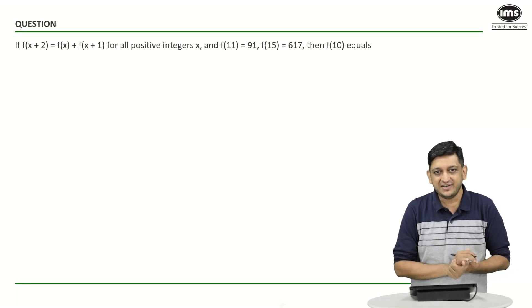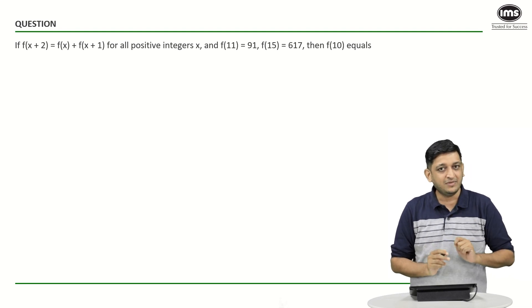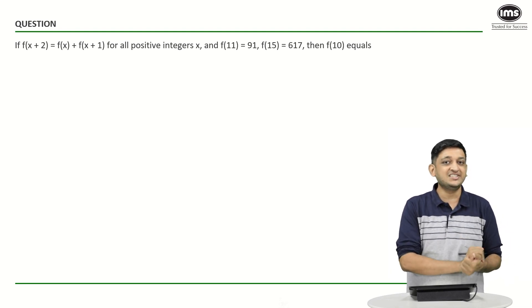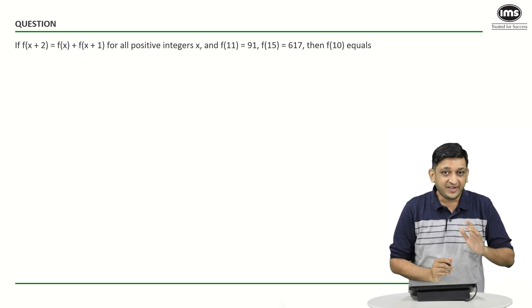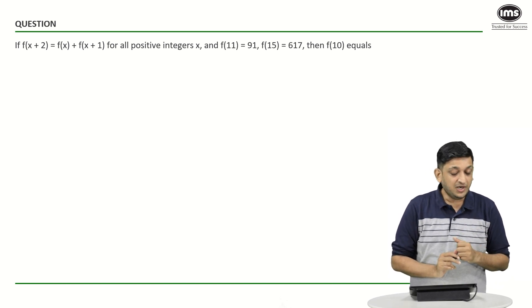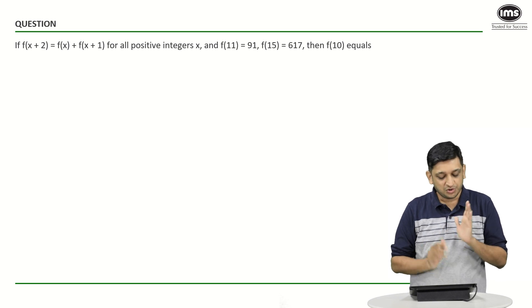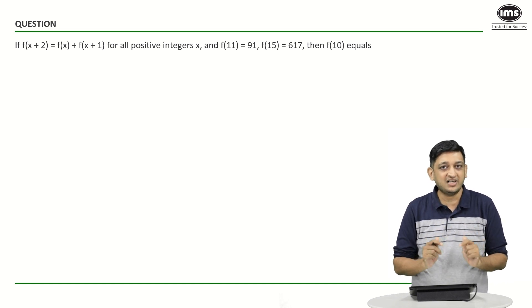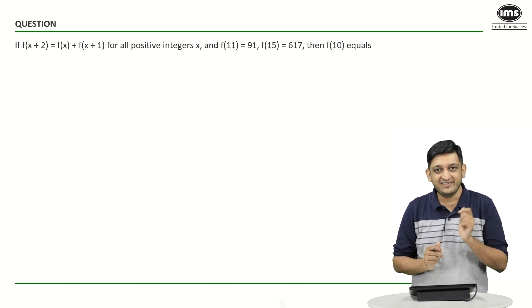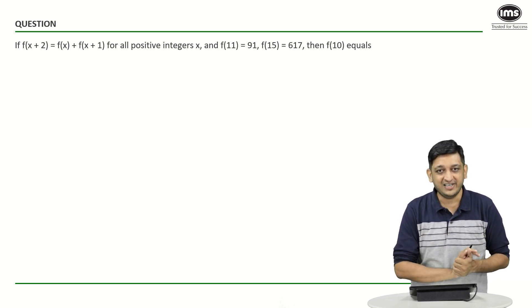Now, this question is rather straightforward and people who are good at numbers would have figured out what exactly is this function that we are talking about. f(x+2) = f(x) + f(x+1). So, those of you who have figured out what this particular concept is or what exactly is this sequence, do comment below in this section.